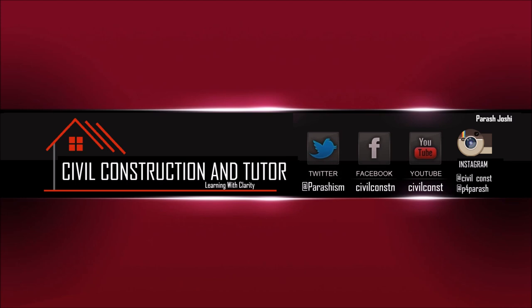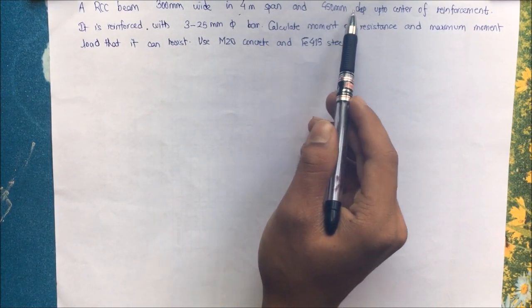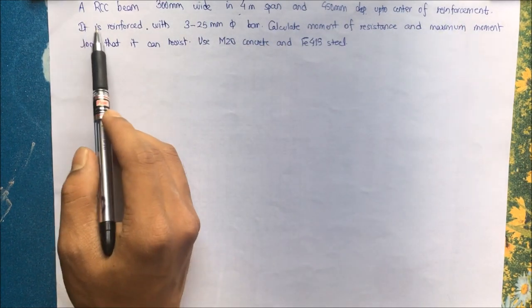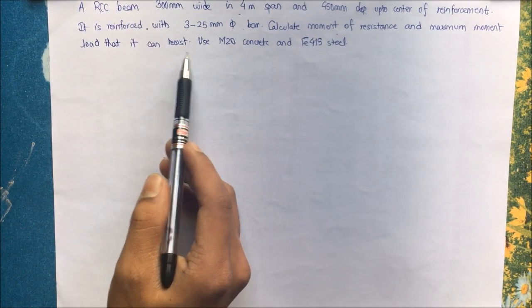We have a question here: RCC beam 300mm wide in 4 meter span and 450mm depth up to center of reinforcement. It is reinforced with 3 25mm bars. Calculate moment of resistance and maximum load that it can resist using M20 concrete and Fe 415 steel.